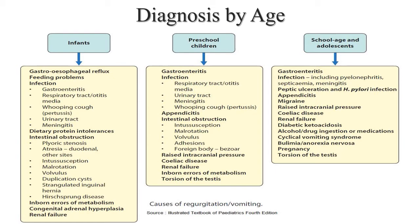In school age and adolescence: gastroenteritis, infections like pyelonephritis, septicemia, meningitis. Peptic ulceration and H. pylori infection, appendicitis, migraine, raised intracranial pressure, celiac disease, renal failure, diabetic ketoacidosis, alcohol or drug abuse. Cyclic vomiting syndrome, bulimia, anorexia nervosa, pregnancy and torsion of testis.